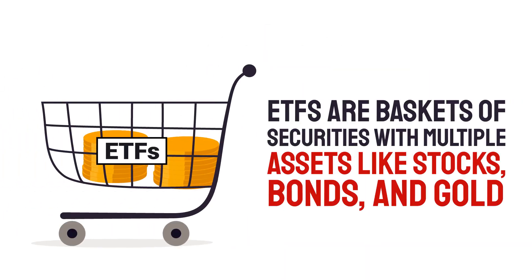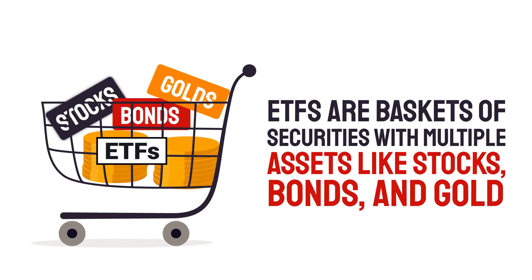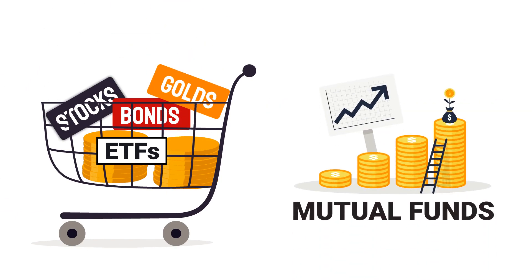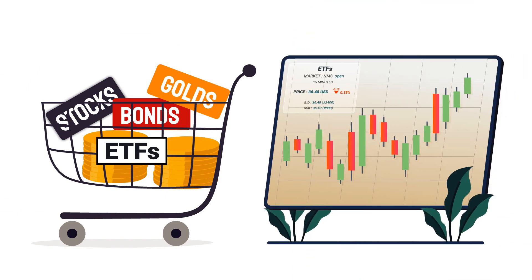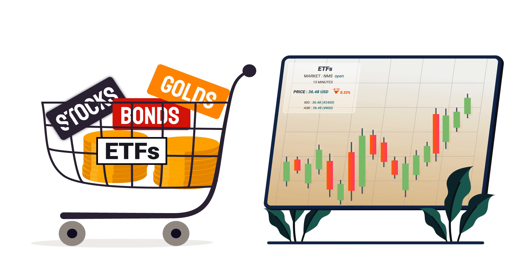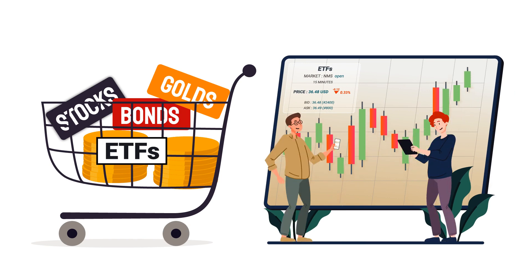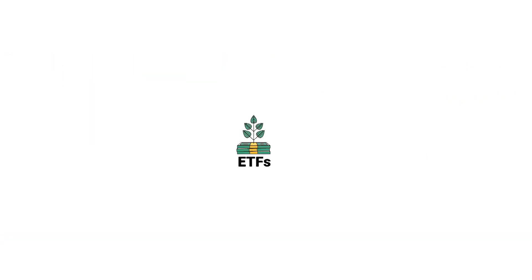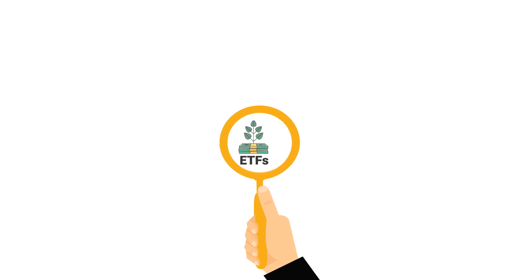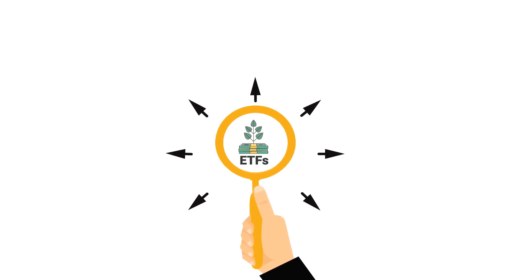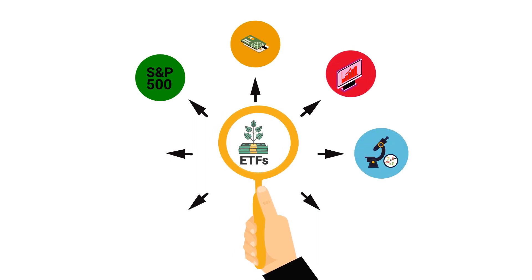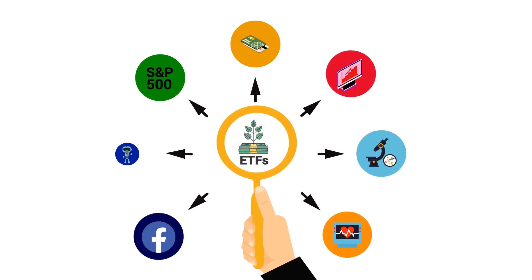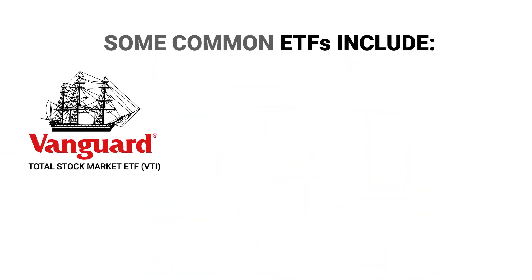What is an ETF? ETFs are baskets of securities with multiple assets like stocks, bonds, and gold, which makes them similar to mutual funds — especially index funds. However, unlike mutual funds, ETFs trade like stocks, meaning that investors can buy and sell shares on an exchange. ETFs' versatility makes them good tools for investing either in broad market indices like the S&P 500 or in sectors such as technology or health, and sub-sectors such as social media or robotics.